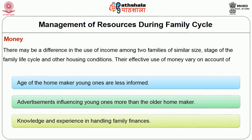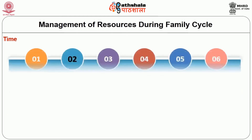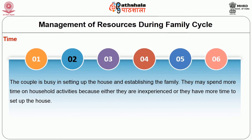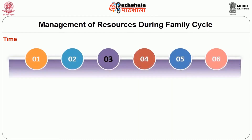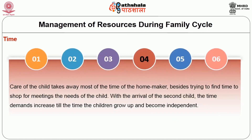The second most important resource is time. Time availability is limited to 24 hours a day for everyone, but the demands on that time may be less than, equal to, or greater than what can be managed. For the beginning family in stage 1, the demand on time is low for both gainfully employed and non-gainfully employed. The couple is busy in setting up the house and establishing the family. They may spend more time on household activities because either they are inexperienced or they have more time to set up the house. The family in stage 2 brings higher demands for time with the arrival of the first child. Care of the child takes most of the homemaker's time, in addition to meeting the needs of the child. With the arrival of the second child, the time demands increase until the children grow up and become independent.